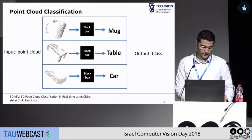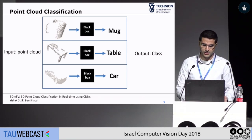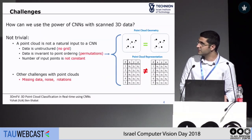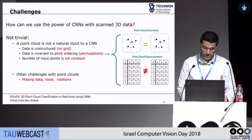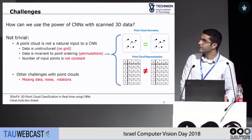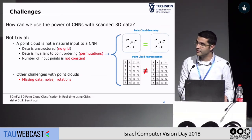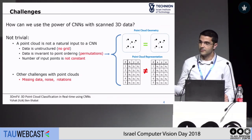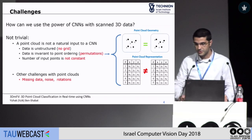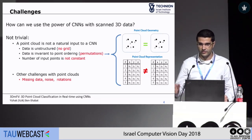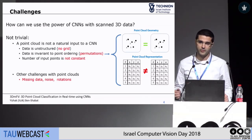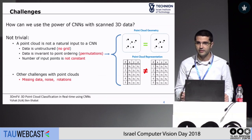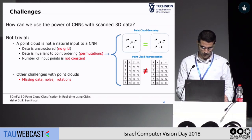Much work has been done for RGB images, but much fewer work on point clouds. There's a reason for that: point clouds have significant challenges that images do not have, and you can subdivide these into three main categories. One category is that in point clouds there's no grid. In images, you can represent data as a matrix on a grid of pixels, while in point clouds you can represent it as a matrix but it's not a grid representation.